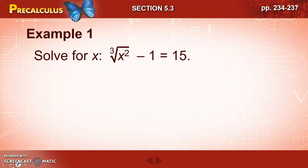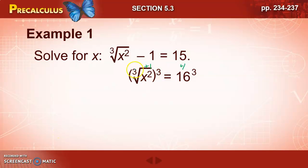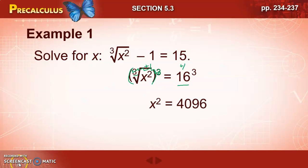Let's solve for x. We have the cubed root of x² minus 1 equals 15. Our first step is to isolate the radical, so we add 1 to both sides to get the radical expression by itself. That gives us the cubed root of x² equals 16. We then raise the expression to the power of the index — our index is 3 — so we raise both sides to the third power. The third root raised to the third power undoes each other, so we're left with x² equals 16³, or x² equals 4096.